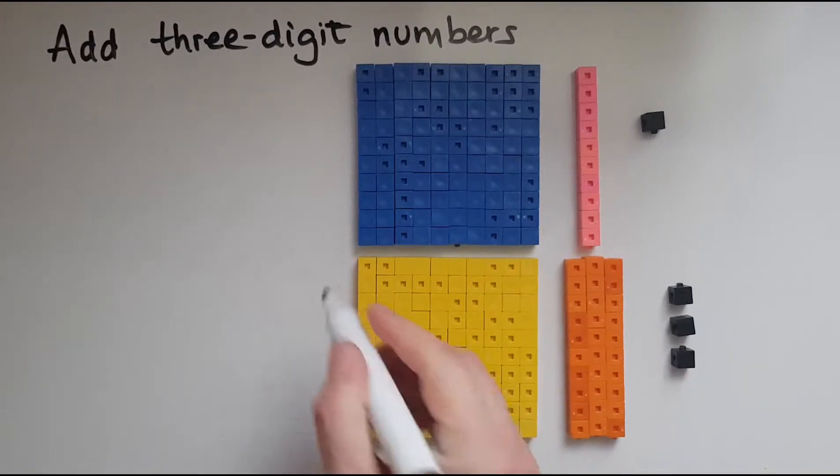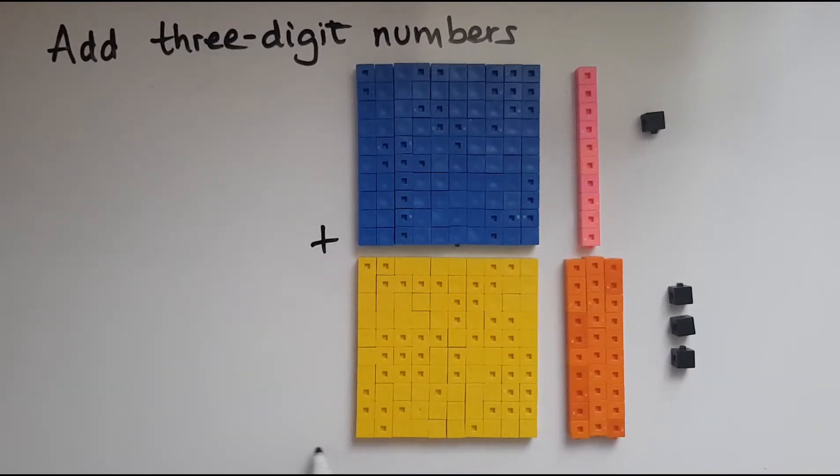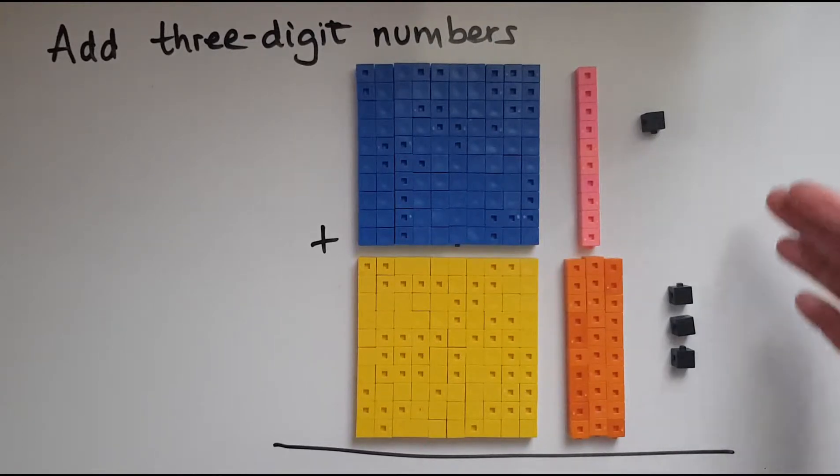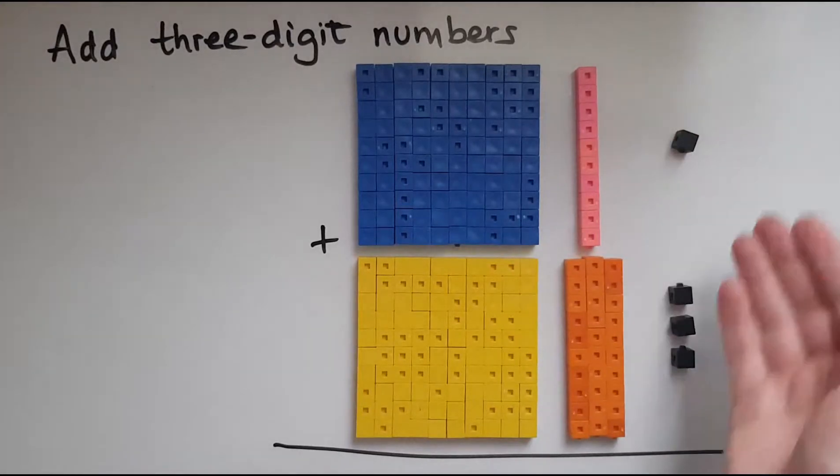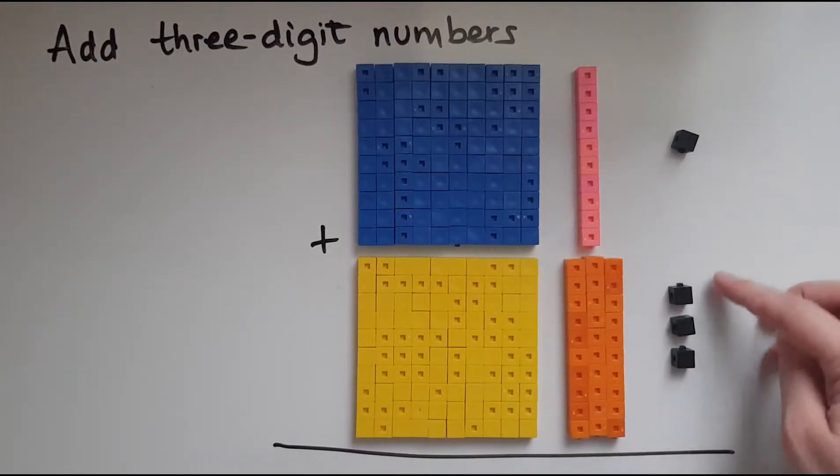What I'm going to do is I'm going to add these two amounts together and let's see what amount I get. So I'll start with the units because I might have more than 10 and then I'll need to carry them over. So I've got one, two, three, four. So one and three makes four.